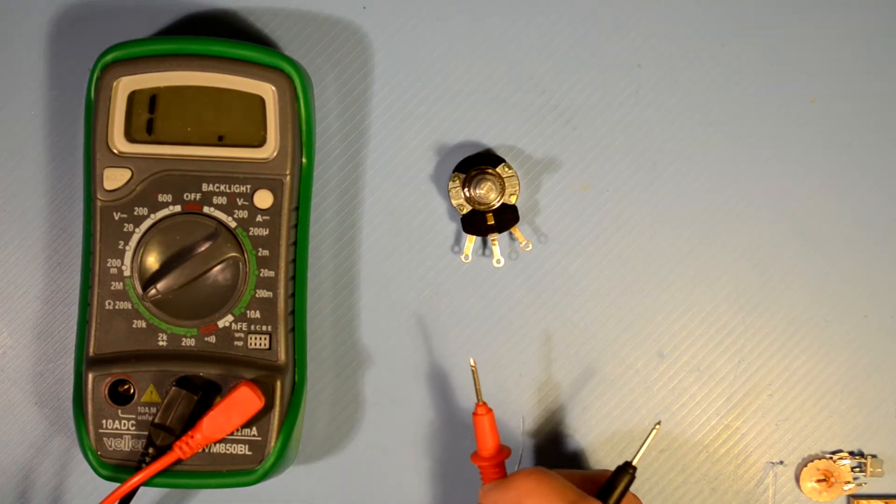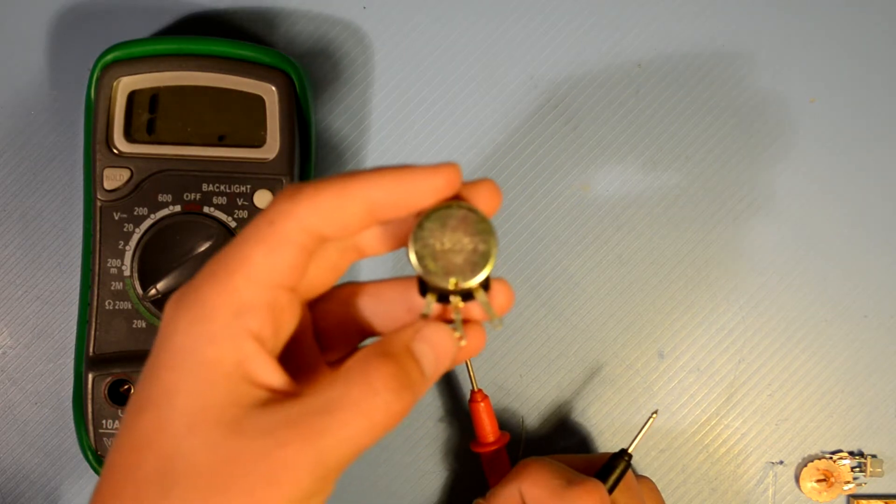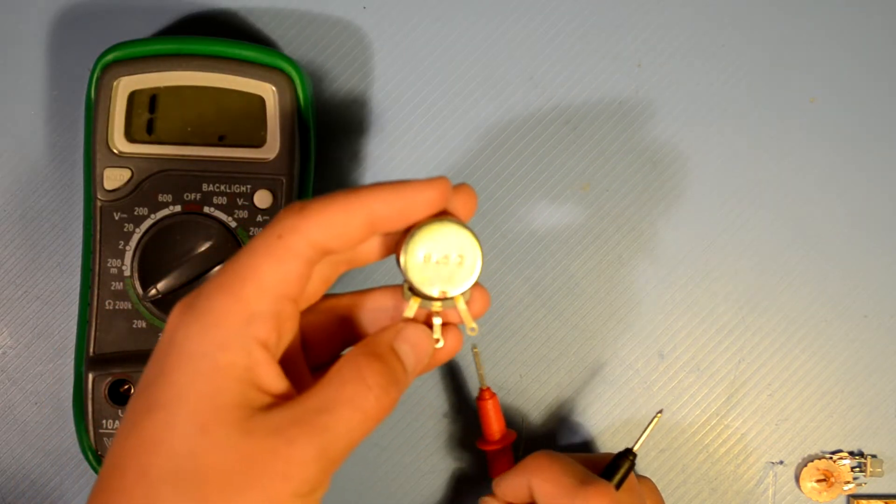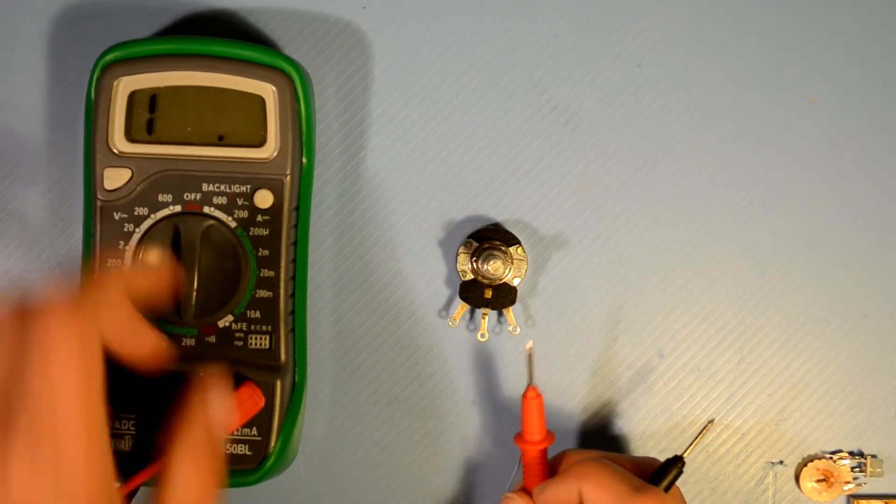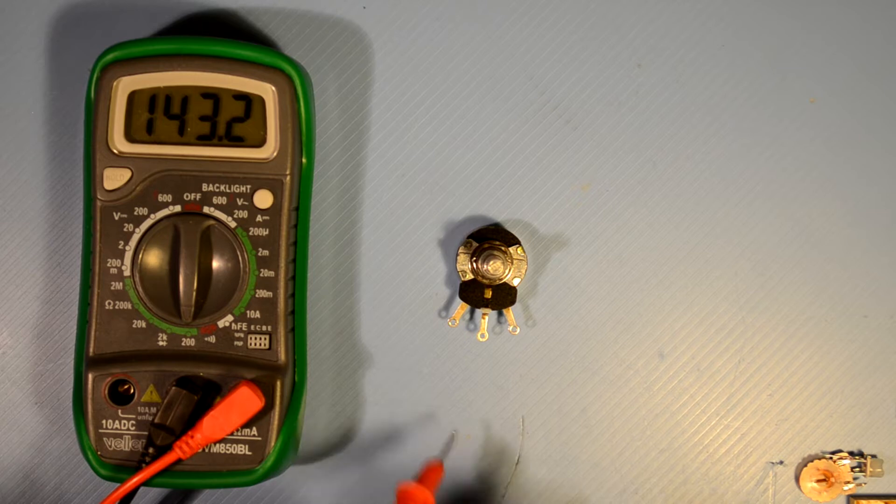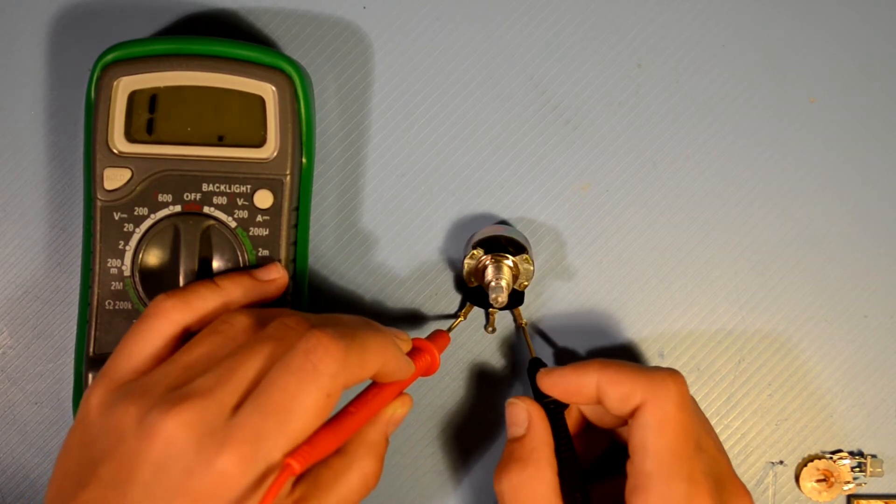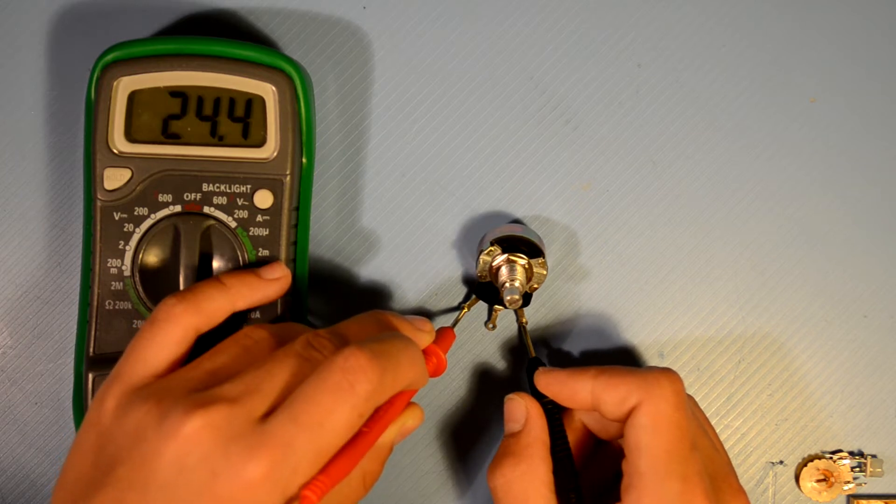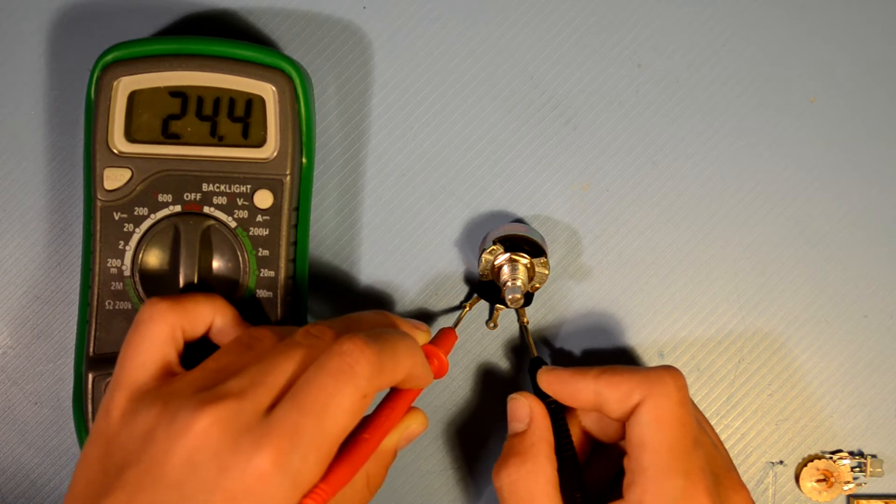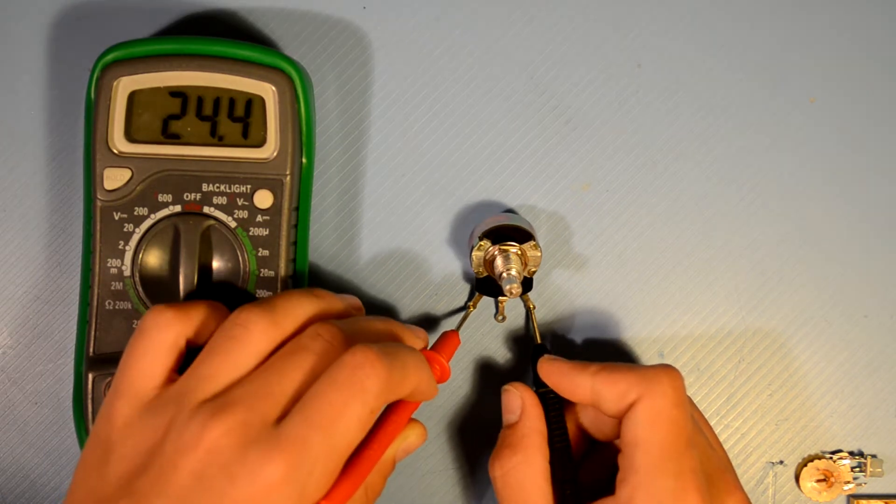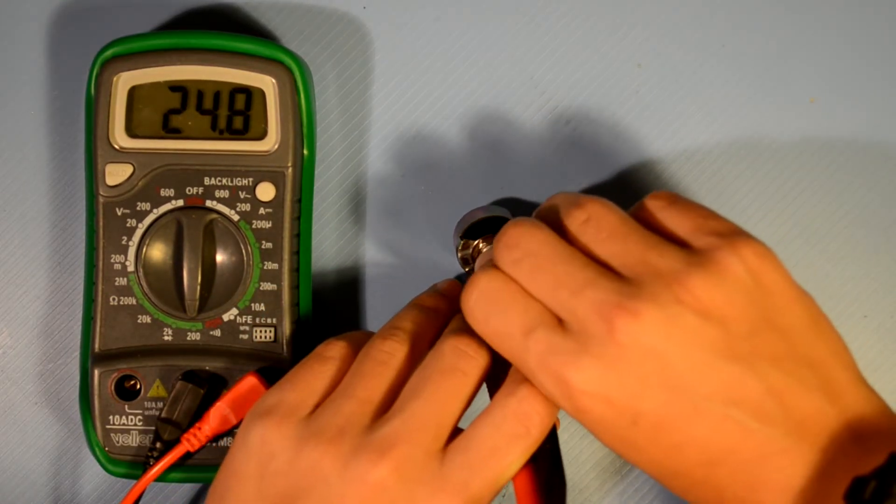To determine the resistance value of a potentiometer, most of the time you can just look on the back. On the back of this one, you can see that it says 25 ohms. Let's test this. I'll put my meter into the ohms range. And you're going to put one probe on the outermost terminals, showing approximately 25 ohms. Now, if you'd like to see the varying resistance, if I turn this knob, nothing happens.